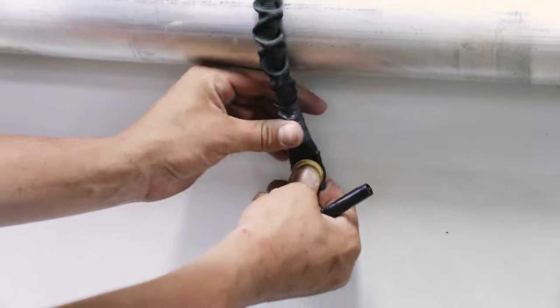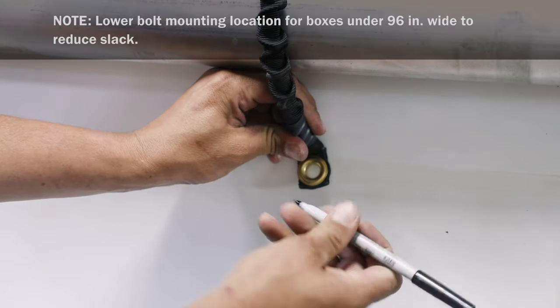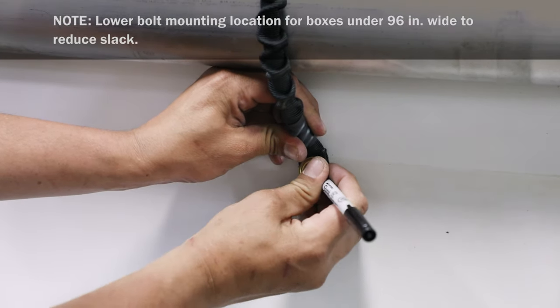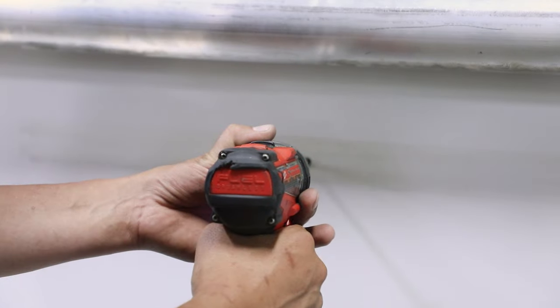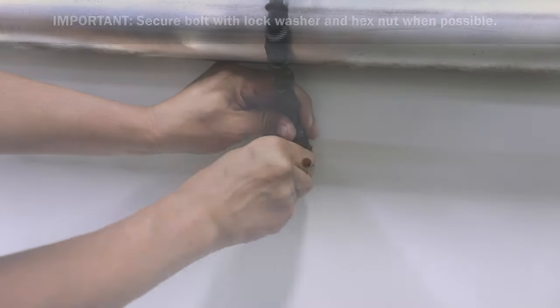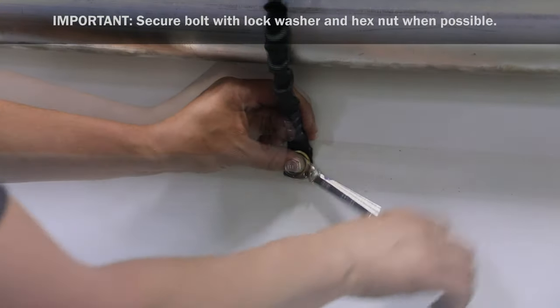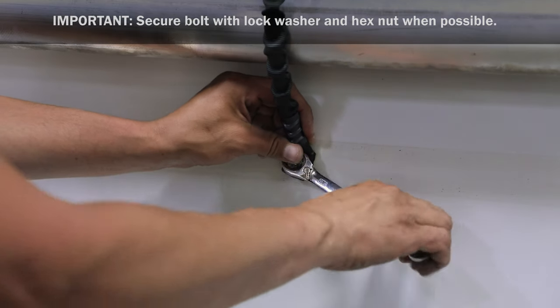Pull free end of cord under roll tube and mark hole location. Now drill hole at marked location and secure bracket flat against box with self-threading bolt. Repeat steps to install remaining cords.